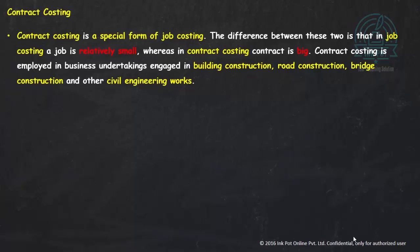Examples of contract costing include building construction, road construction, bridge construction, flyovers, and civil engineering work.